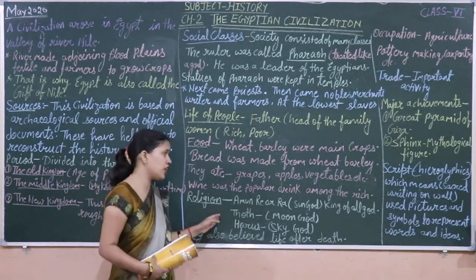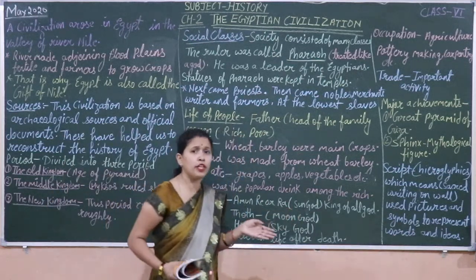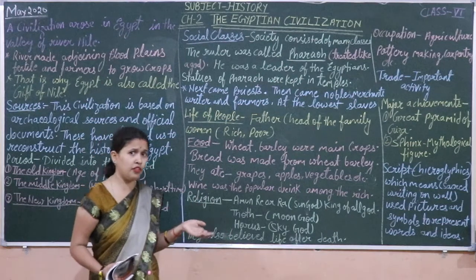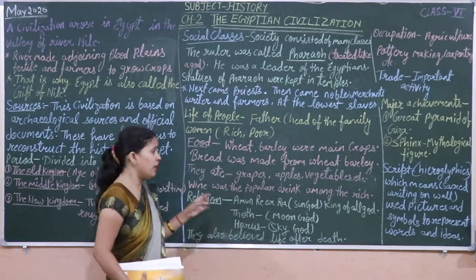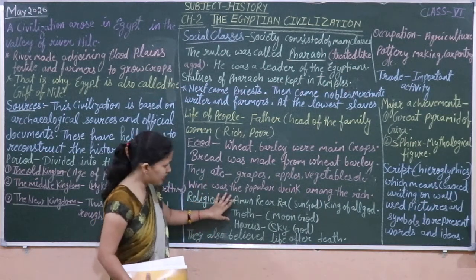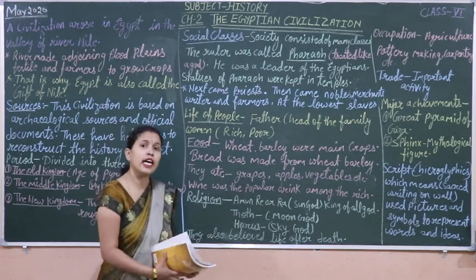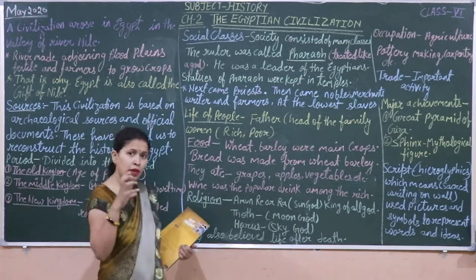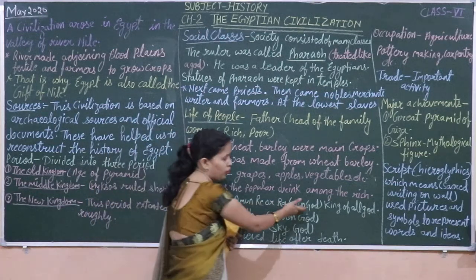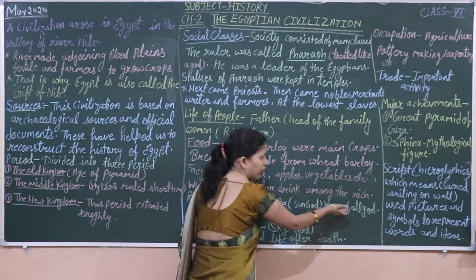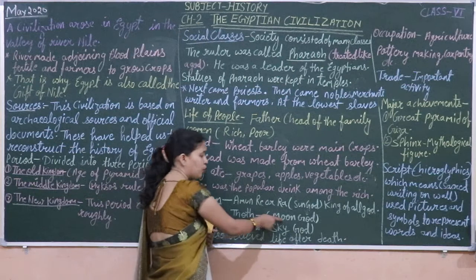Now this is religion. They worshipped so many gods. They worshipped very important gods. The sun god is the king of all gods. They also worshipped the moon god.